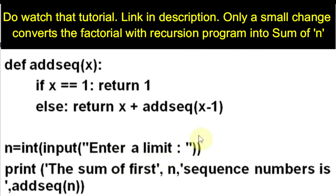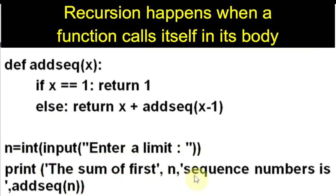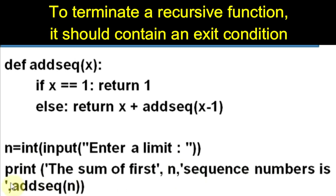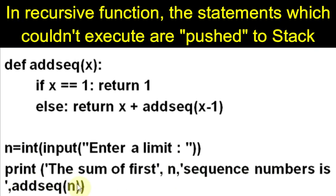When I run this program, it will ask me the limit. Suppose I enter 5. 5 will be assigned to the variable n. The sum of first 5 sequence number is, you are calling addseq function, taking this argument 5, which will be assigned to the parameter x.